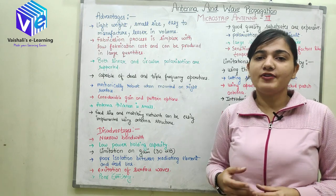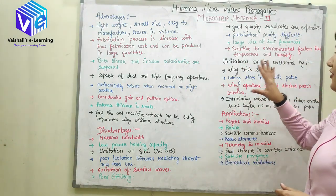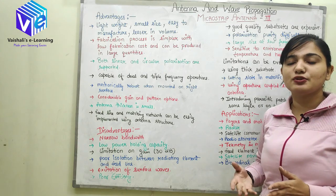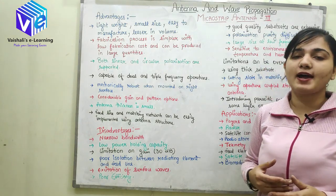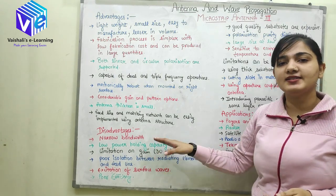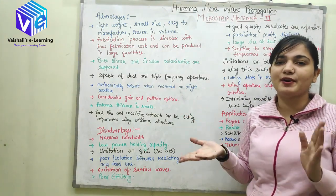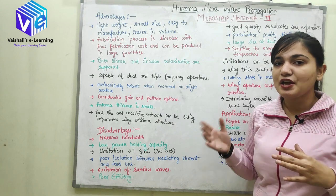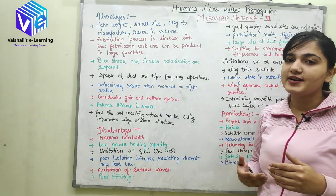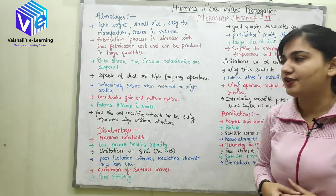Now we will see how we can overcome these limitations. First, we can use a thick substrate. A thick substrate is used to overcome the surface waves problem and also helps to provide wider bandwidth — the narrow bandwidth problem is eliminated using a thicker substrate. However, we cannot use a very thick substrate because of size constraints, so thickness must be limited to a certain extent.